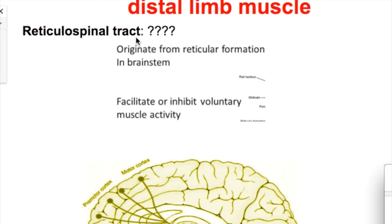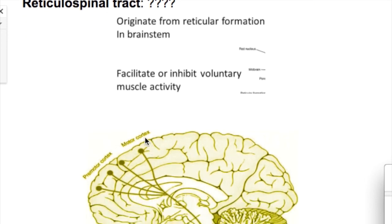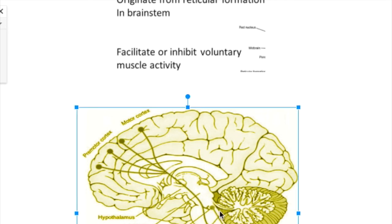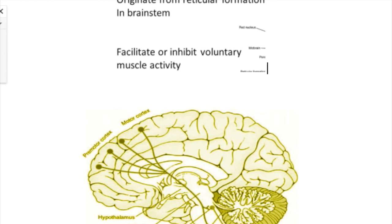The reticulospinal tracts that control muscle movement originate from the reticular formation in the brain stem and facilitate or inhibit voluntary muscle activity. There are two groups: one arising from the pons and one from the medulla. The pontine reticulospinal tract is excitatory — it excites the alpha and gamma motor neurons of the spinal cord and runs down as the medial reticulospinal tract. The medullary reticulospinal tract runs as the lateral reticulospinal tract and has a strong inhibitory effect on alpha and gamma motor neurons.